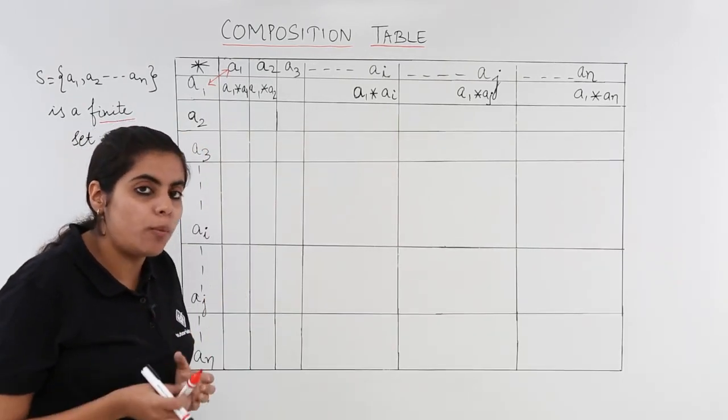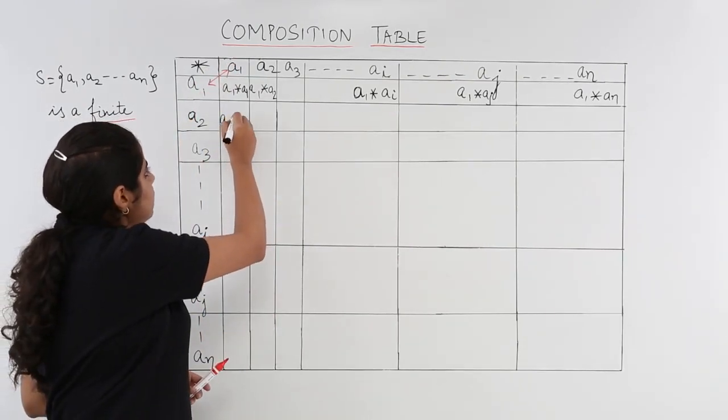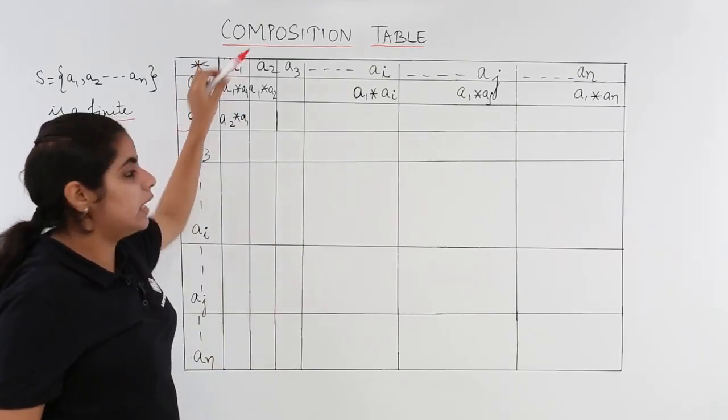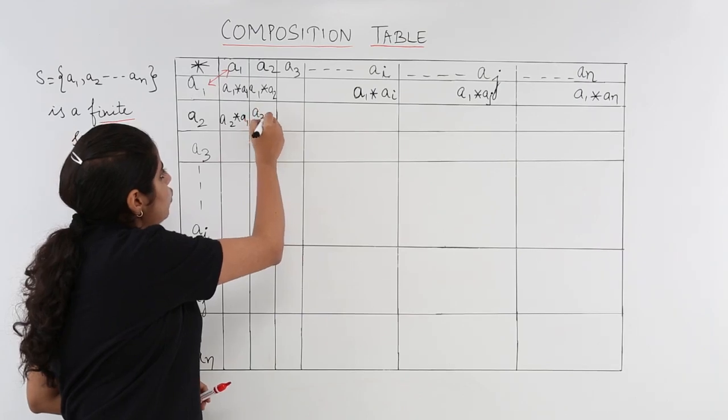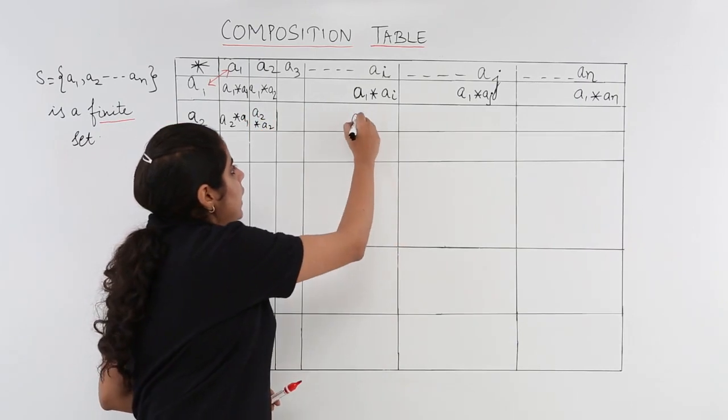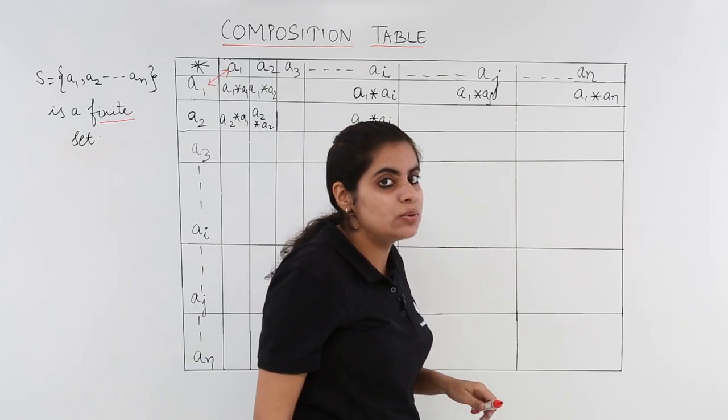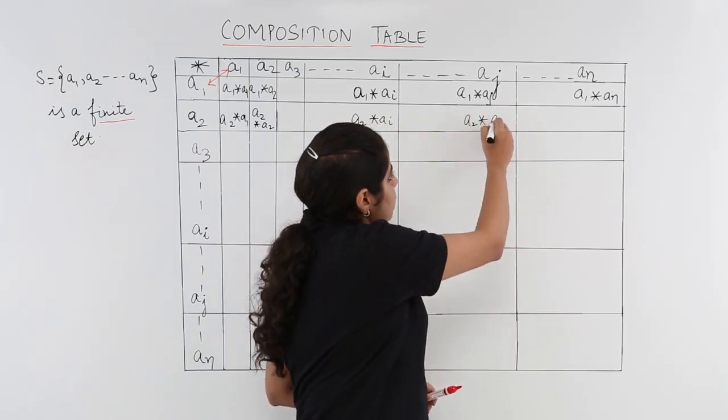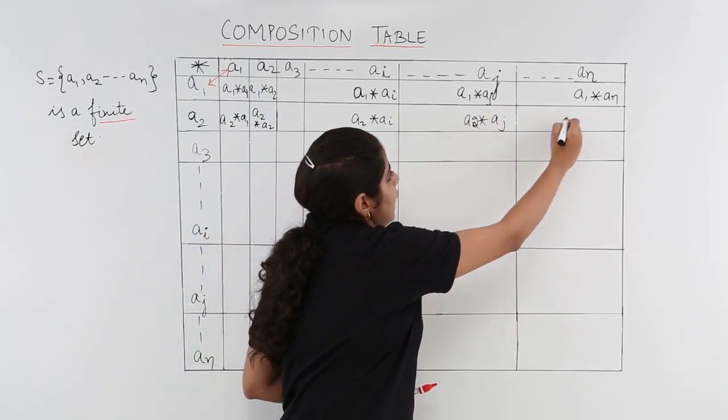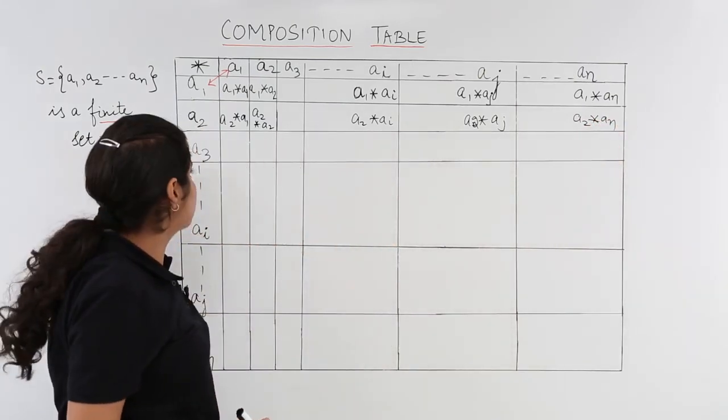Now what happens when I have to do the a2 row being filled? I have to just operate a2 with a1, that gives me a2 star a1. Then a2 with a2, so a2 with a2 will give me a2 star a2. So I write a2 star a2, and so on a2 star ai. The similar story happens with a3, so it can be completed then with a4, then with a5 and so on.